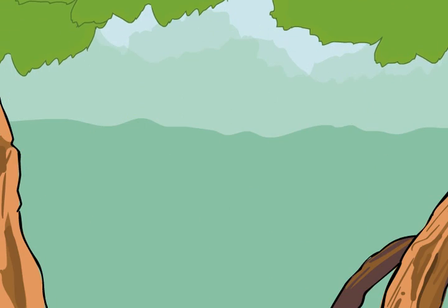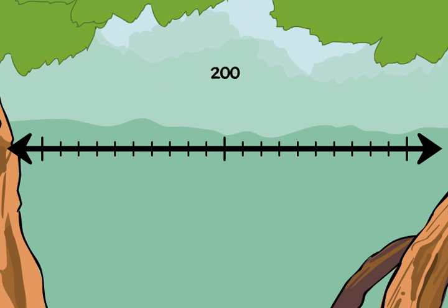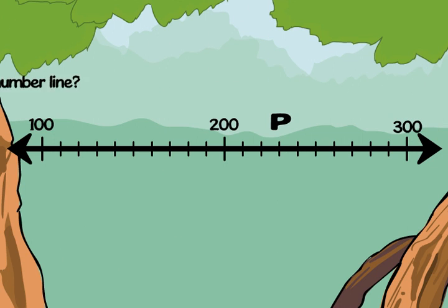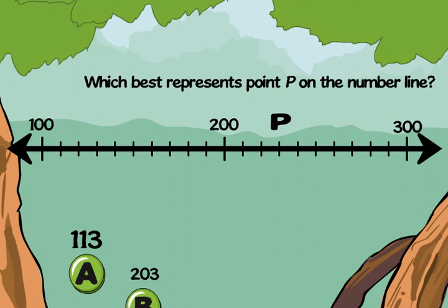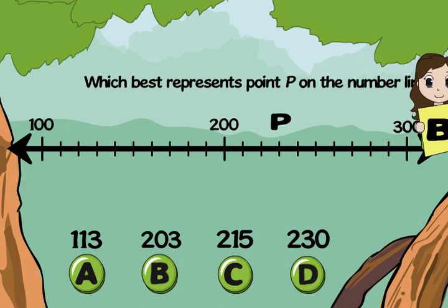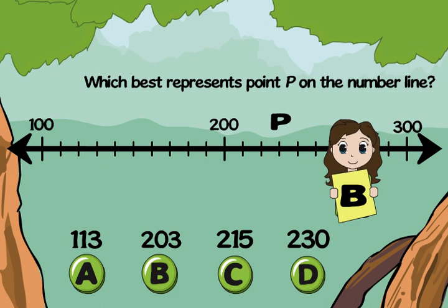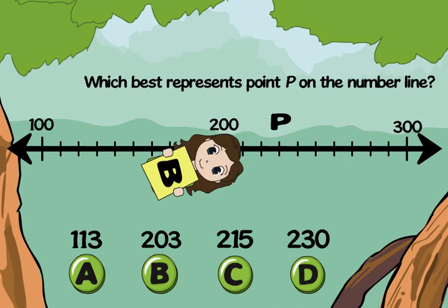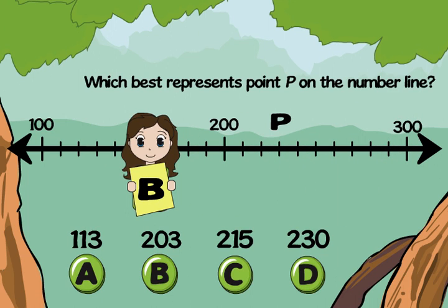Now that you know the basics, let's practice. We can solve this problem together. Which best represents point P on the number line? I think it's B — three marks after 200 is 203.